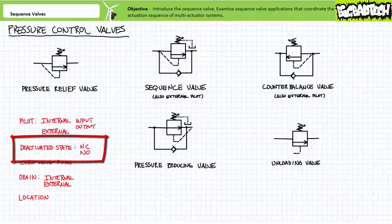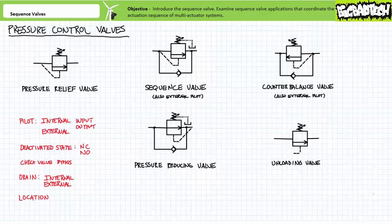Deactivated state: all pressure control valves have a deactivated state. When pressure in the pilot line exceeds the adjustable set value, the valve actuates into its opposite state. Most of these valves are normally closed and open when pressure exceeds the set value, operating just like an ordinary pressure relief valve. The exception is the pressure reducing valve, which is normally open, and when pressure exceeds the set value, the valve closes. That's a dead giveaway.